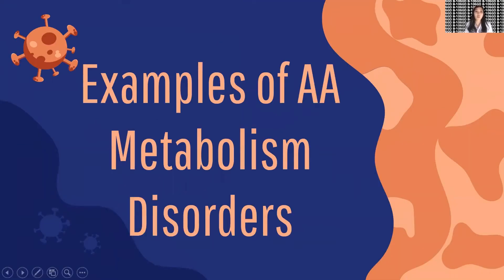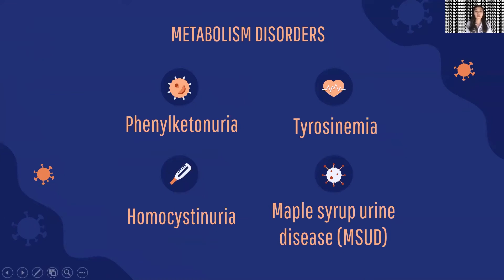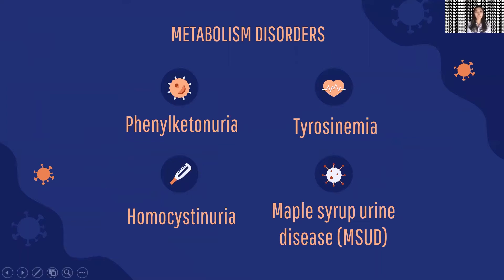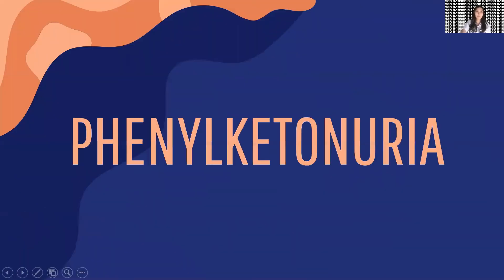There are several examples of amino acid metabolism disorders. The first one is phenylketonuria, the second is tyrosinemia, the third is homocystinuria, and the fourth is maple syrup urine disease, or MSUD. These will be further explained by the group members.